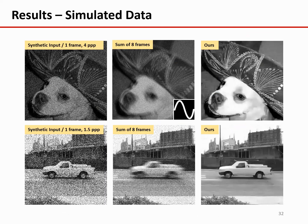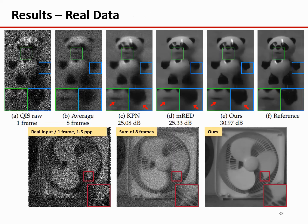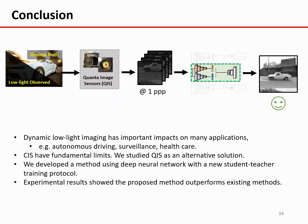Here we show some results on other types of global motions and local motion. We also verify the results using real QIS data, collected using a prototype camera, the Gigajot Pathfinder. From the analysis on real data, we have similar findings as on simulated data.